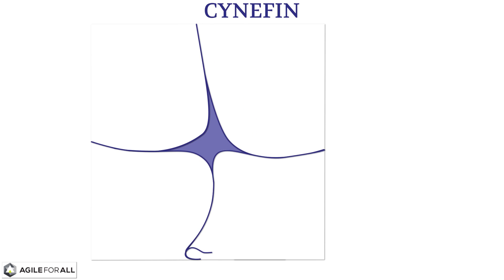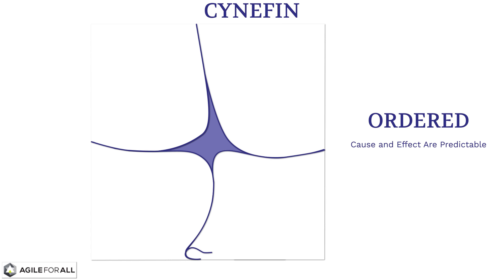On the right side, we are describing systems that are currently in what is called an ordered state, meaning cause and effect are predictable. If I take these steps, I will consistently get the same outcome, over and over again.